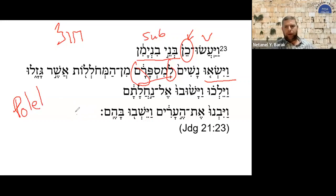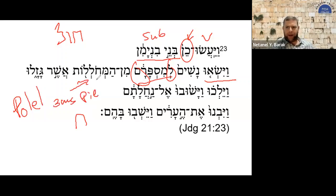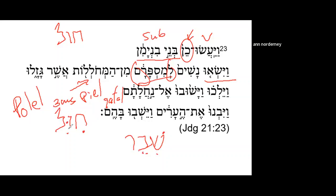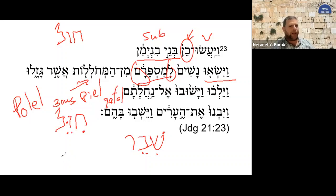Theoretically, we should have had the basic third person masculine singular of the pi'el qatal. In a strong verb we have something like 'shiber.' I'm putting in the root letters het, vav, and lamed — so we would have something like 'chi-vel.' That would be the pi'el. But the vav, as you remember, often loses its consonantal value and is only retained as a reading mother.